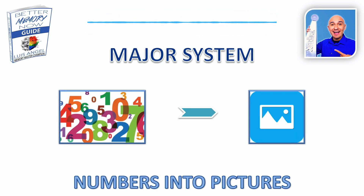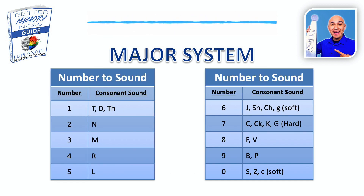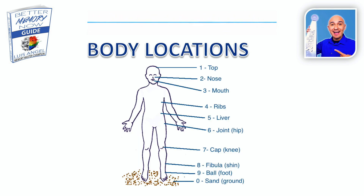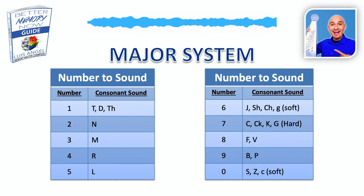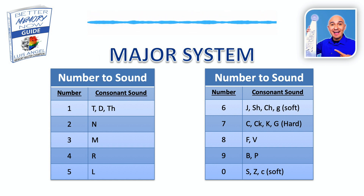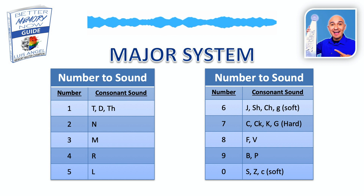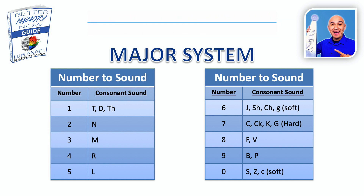We are going to use the same system — the major system — in order to come up with the images for these numbers. For the 90s, for the nine specifically, we use the ball of our foot, one of our body locations, in order to determine the consonant sound. So for nine, we use B or P. Every number in the 90s is going to start with the B or P sound.